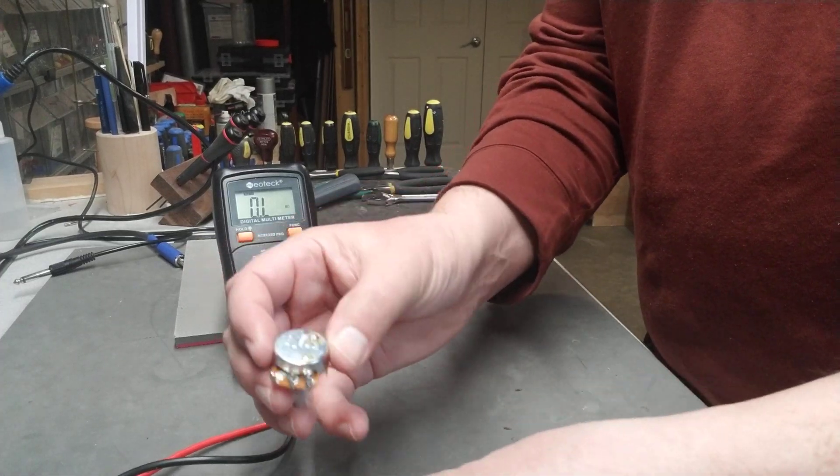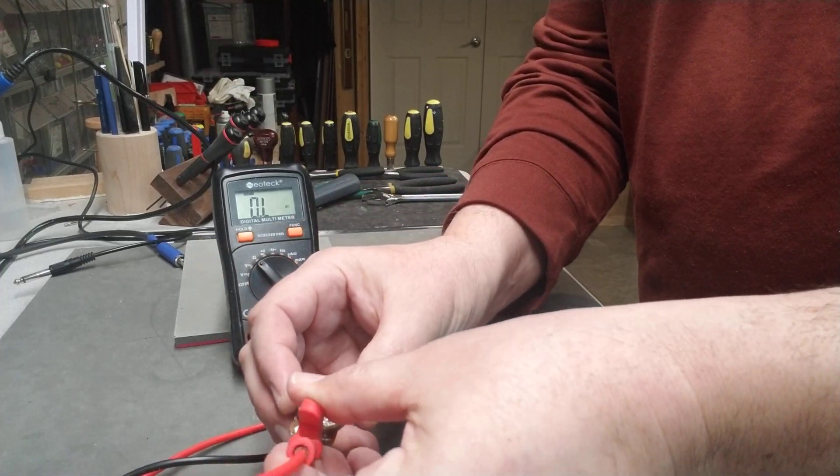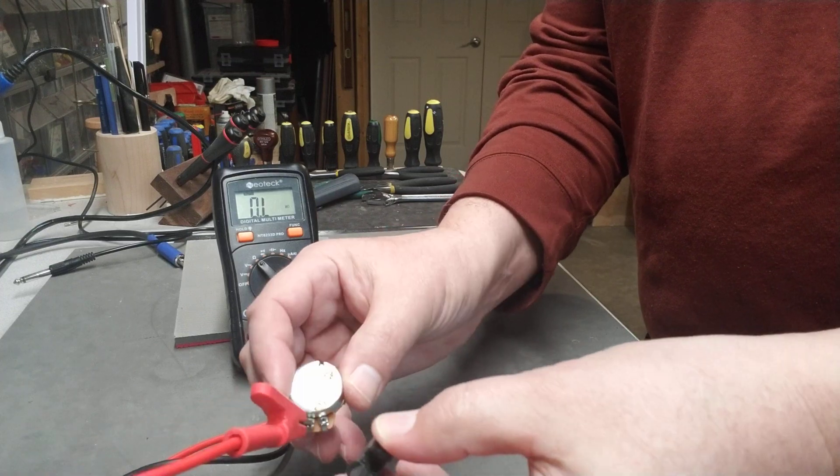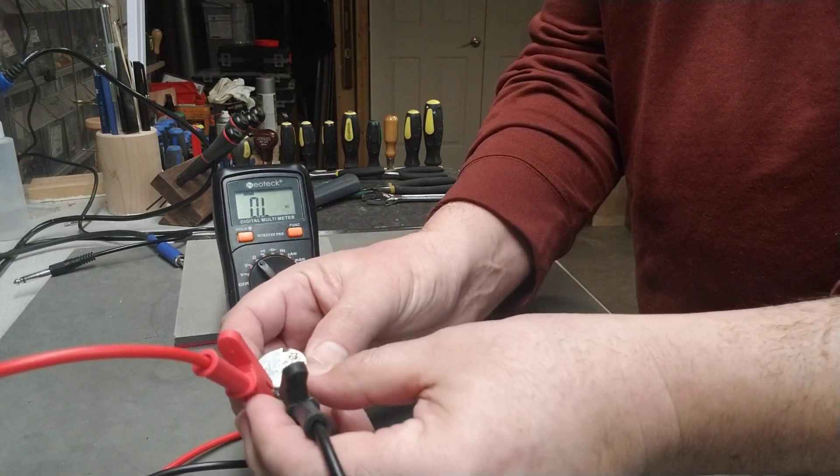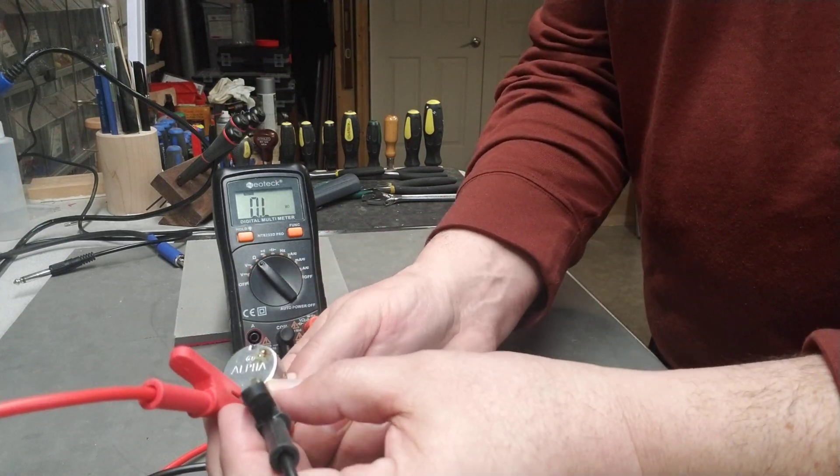So here, do the same thing. Output in the middle and put the black here on the right hand lug. Let's start turning this around.